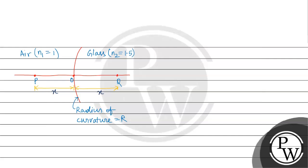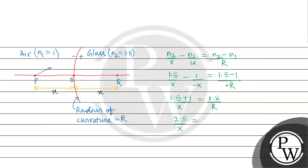Now, according to sign convention, the ray is going from P towards Q, so that direction is positive. Applying the formula: N2/V minus N1/U equals (N2 minus N1)/R. N2 is 1.5, V is x, N1 is 1, U is minus x, and R is positive. So: 1.5/x minus 1/(−x) equals 0.5/R, which gives 1.5/x plus 1/x equals 0.5/R, that is 2.5/x equals 0.5/R. Multiplying both sides by 10: 25/x equals 5/R, so x equals 25R/5, which gives x equals 5R.